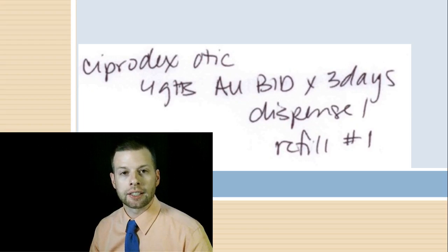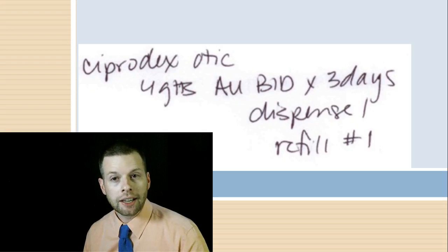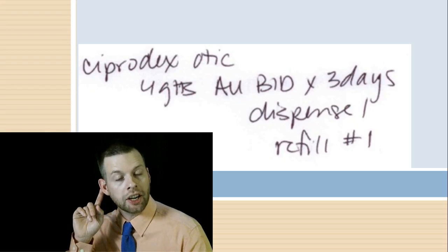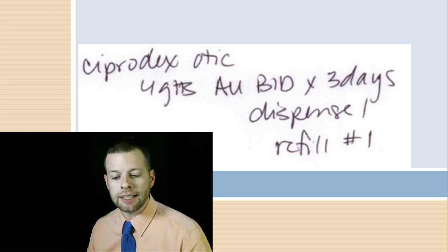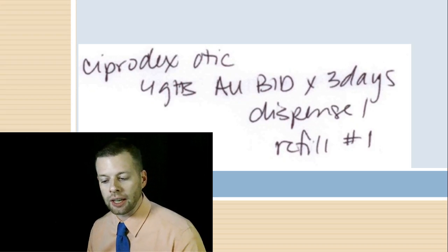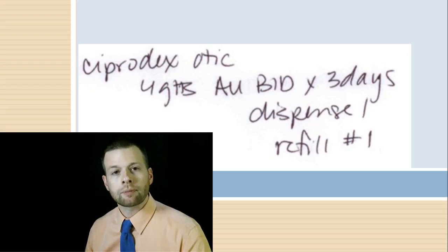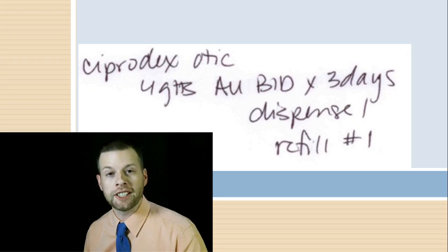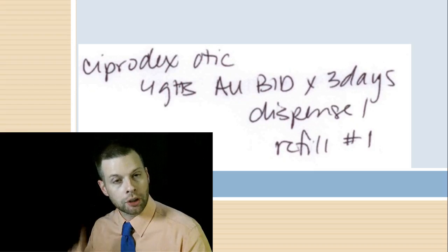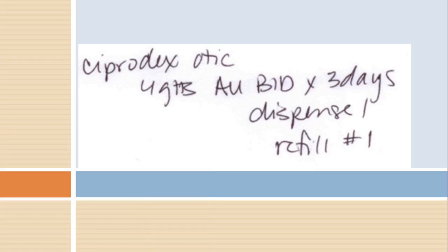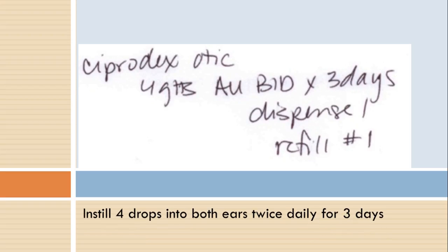Ciprodex otic — otic means eardrops. When you hear otic, think eardrops; ophthalmic means eye. It says four GTTS — that's four drops — AU, meaning both ears, BID for three days. We'll dispense one and they get one refill. So: four drops in both ears twice a day for three days.